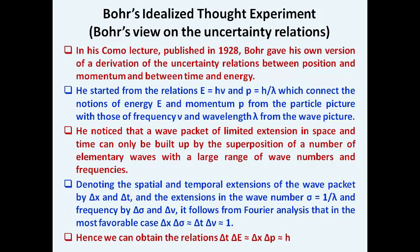Bohr had a specific view on uncertainty relations. In his Como lecture published in 1928, he gave his own version of the derivation of the uncertainty relations between position and momentum, and also between time and energy. Bohr kept rejecting Heisenberg's uncertainty relations because they lacked proper experimental proof, arguing that simple mathematical manipulations alone would not give a proper result. He started to find the relations using E = hν representing wave nature and P = h/λ connecting particle nature.